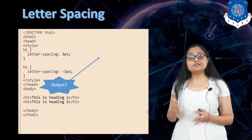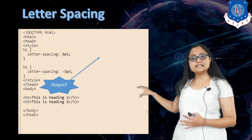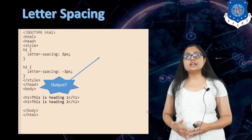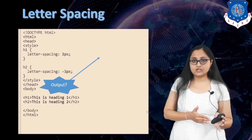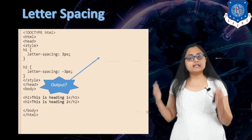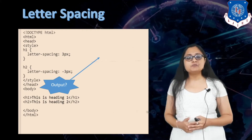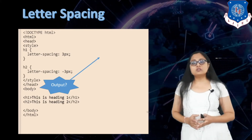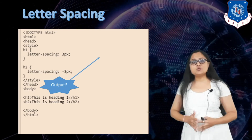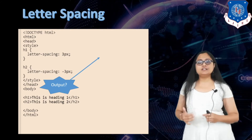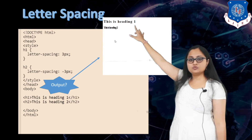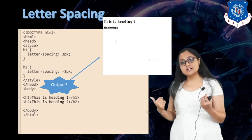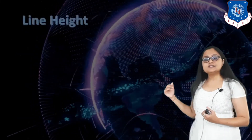For letter-spacing, it is the space between the alphabets. I have two headings h1 and h2 with separate letter spacing. For h1 I have written letter-spacing: 3px — a positive value — so between alphabets there will be three pixels of space. For h2 I have specified -3px, a negative value, so the letters come closer. You can see the inter-letter space has increased for h1 and decreased for h2.